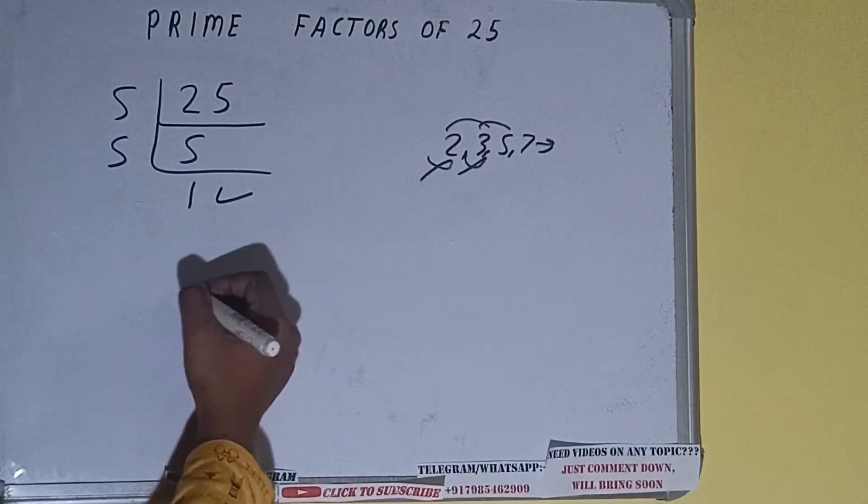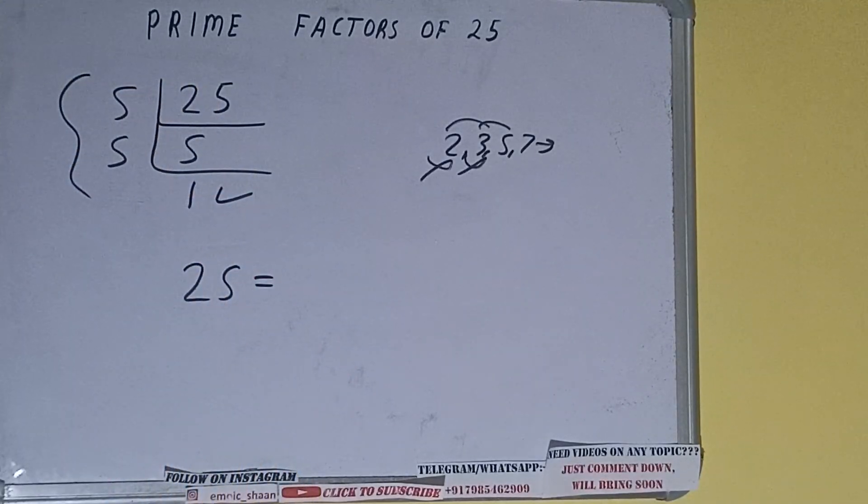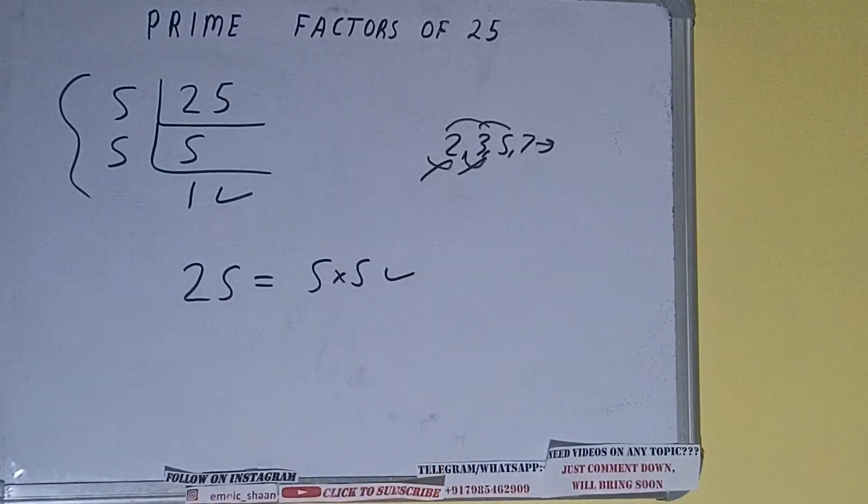Once we get one, we need to stop and do one last thing. That is, prime factor of 25 is equals to multiply whatever we have on the left-hand side, that is five times five. That will be the answer.